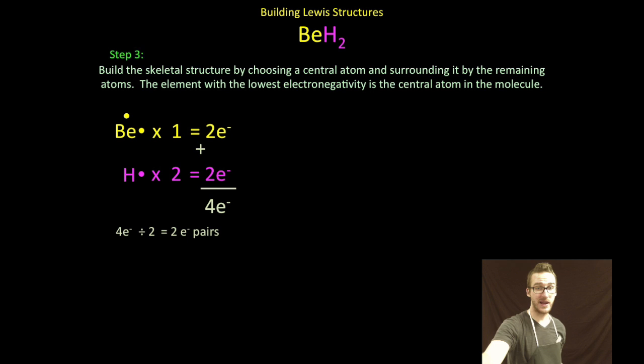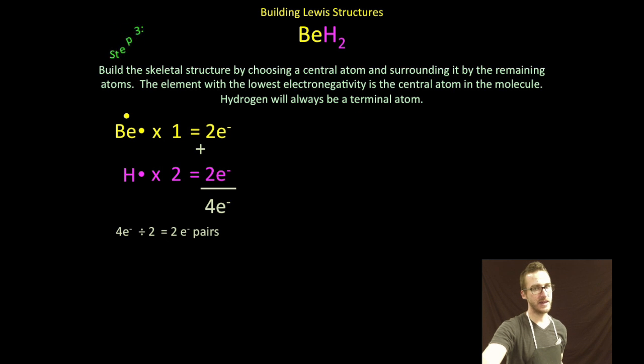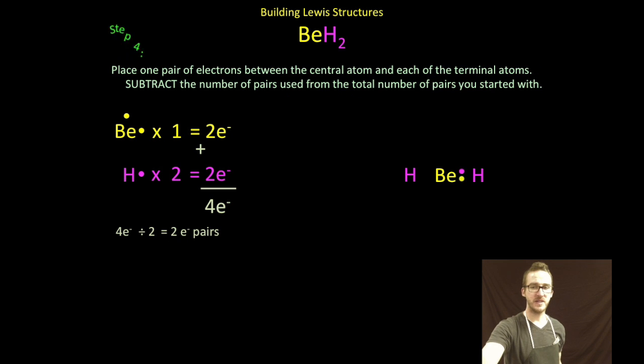Step three, as we build our skeletal structure, remember that we are going to choose the less electronegative element first. Again, you can go to your periodic table, but in an example like this, where we've got hydrogen, recognize that hydrogen is never going to be central. So I put beryllium in the middle and surround it by my two hydrogens. I place a pair of electrons in between that central atom and each of the terminal atoms. It's going to take me two pairs of electrons to do that. I have zero pairs left.